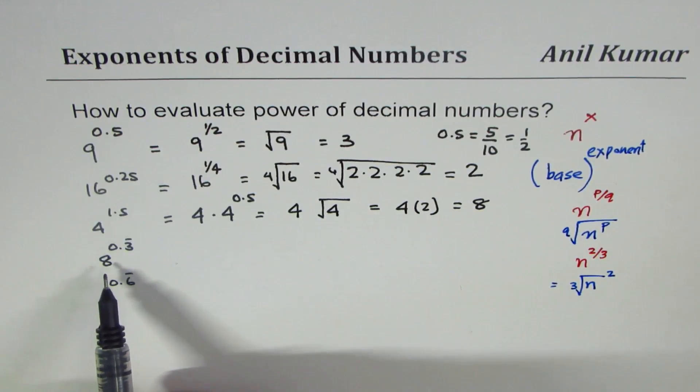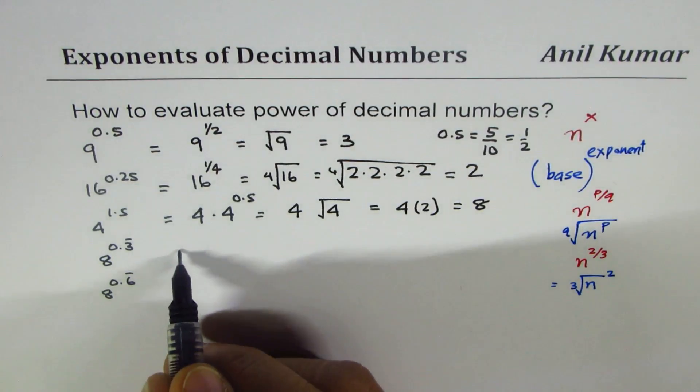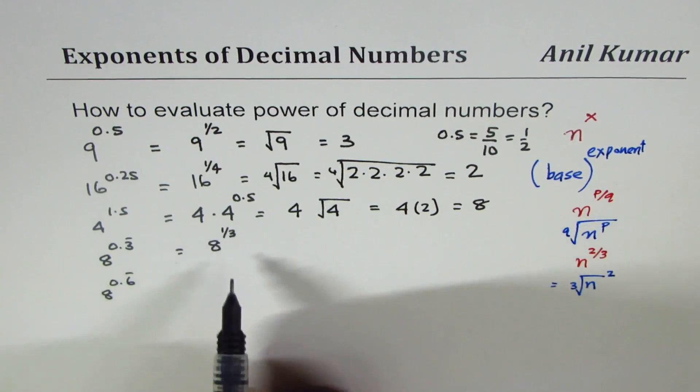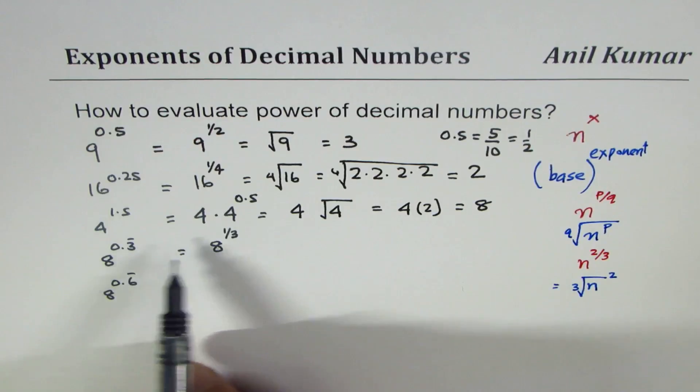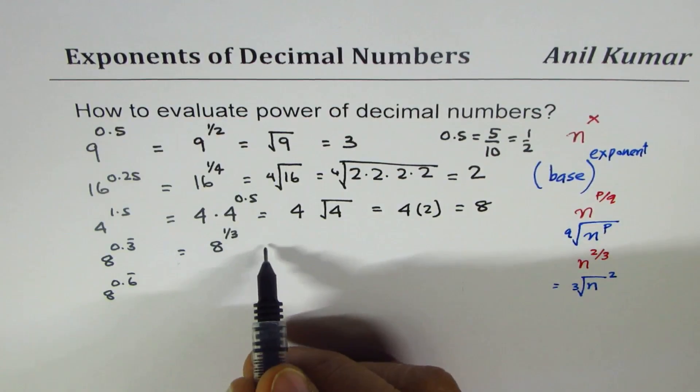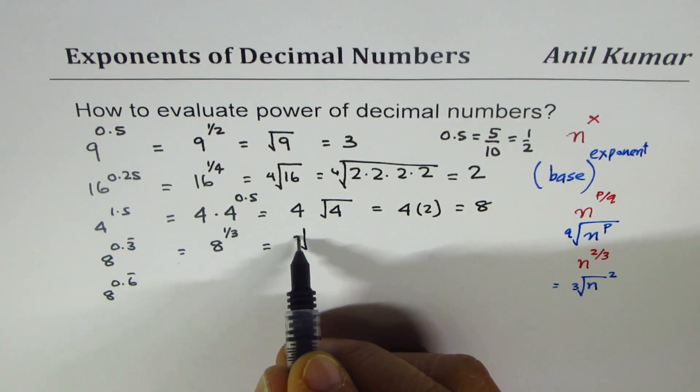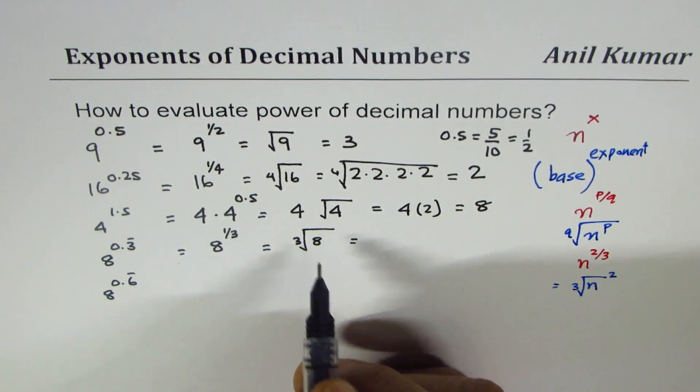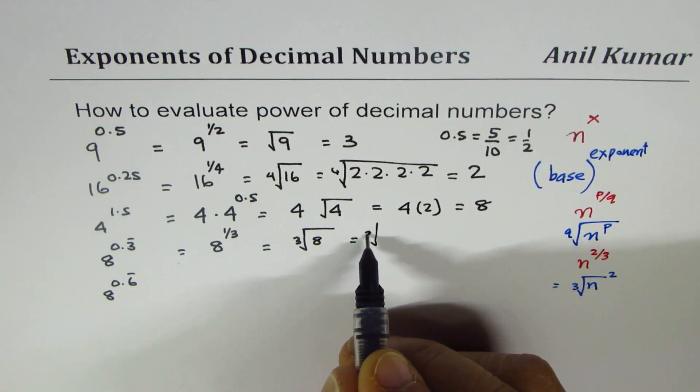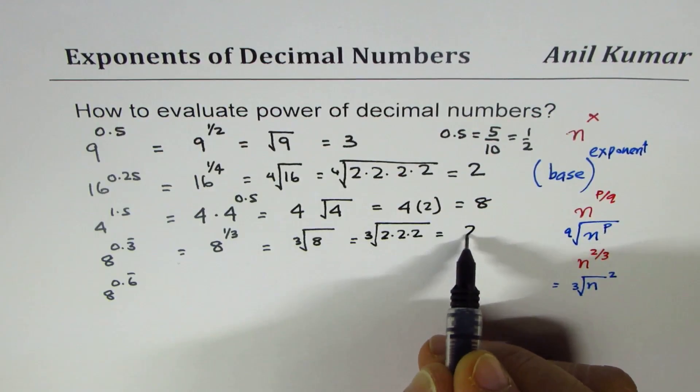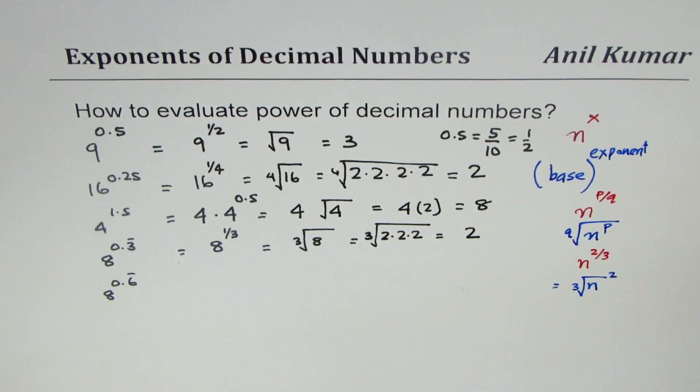The next one is 8 to the power of 0.3 recurring. If you convert that to fractions, you get 8 to the power of 1 over 3. Cube root of 8, this is the cube root of 8. As you know, cube root of 8 is 2, which you could also see like this: cube root of 8, 8 is 2 times 2 times 2, that gives you 2 as your answer.